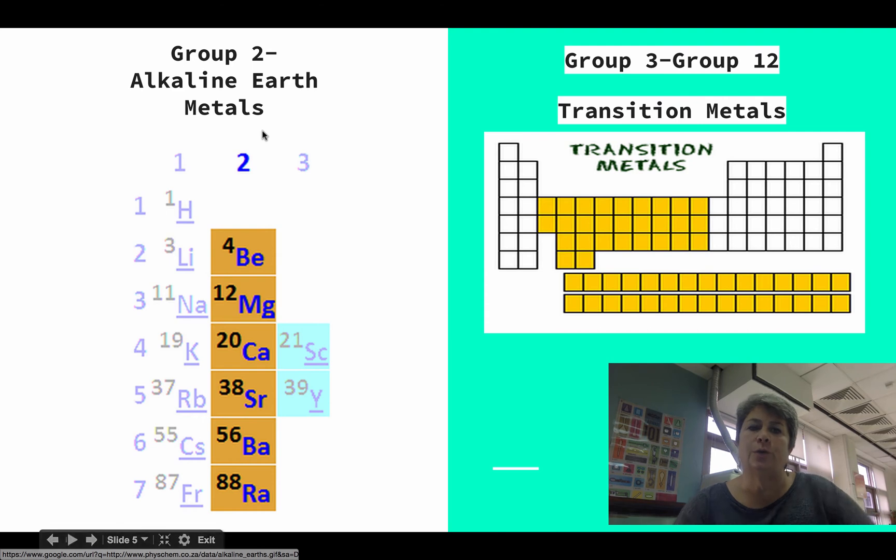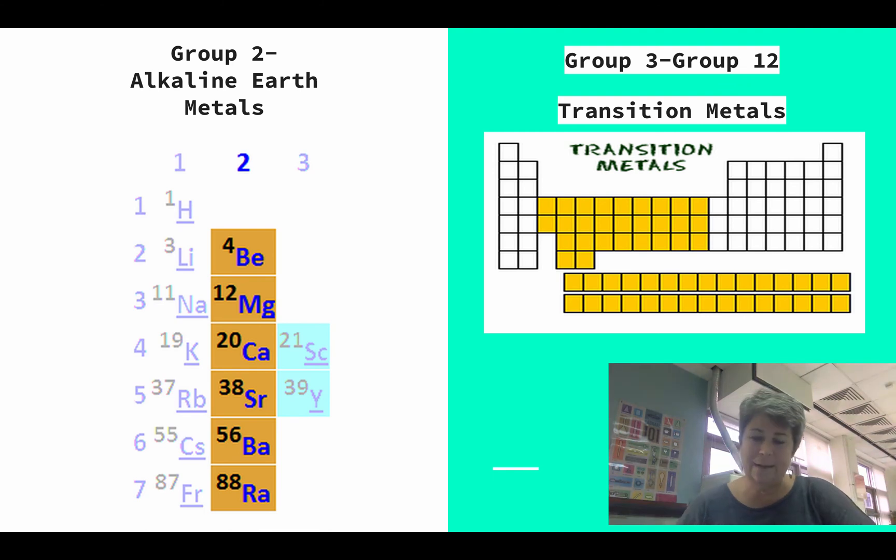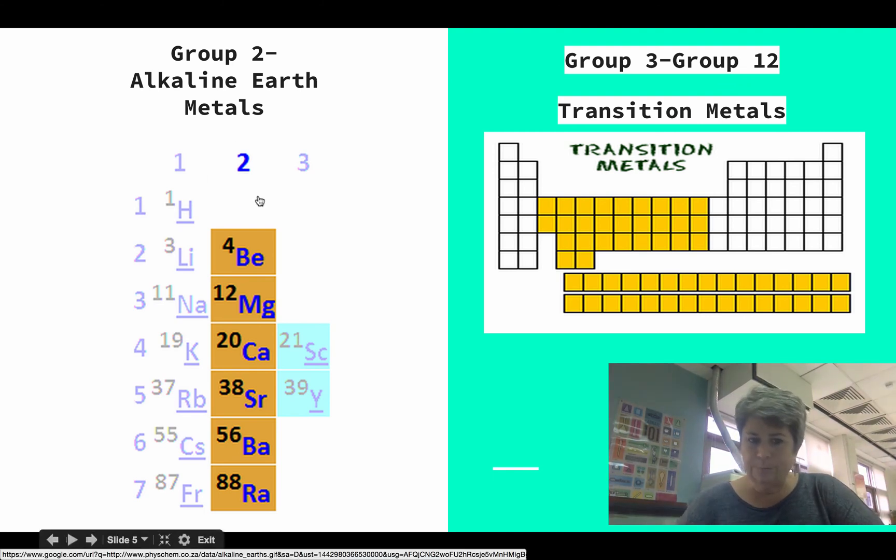Next up, the group two alkaline earth metals. That's the second column on the periodic table. If you have one of these handy, it's always good to look at it. Group two, it starts with beryllium and magnesium, calcium and strontium. It goes down.